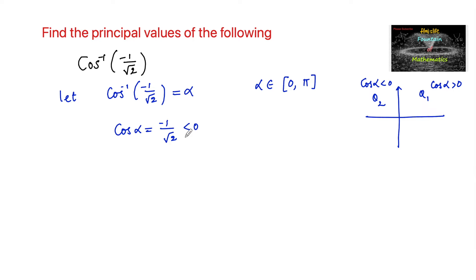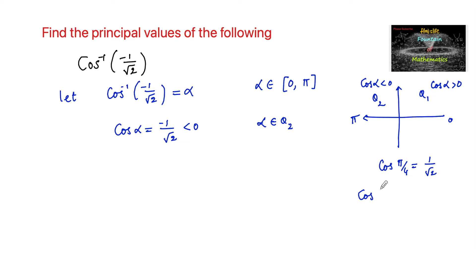Since cos alpha is equal to negative 1 by root 2, we can consider alpha as belonging to the second quadrant. We know that cos(π/4) is 1 by root 2, and since it belongs to the second quadrant, we consider it is below pi. So we shall consider cos(π − π/4), since cos(π − θ) equals negative cos θ, giving cos(π − π/4) equal to negative cos(π/4), that is negative 1 by root 2.